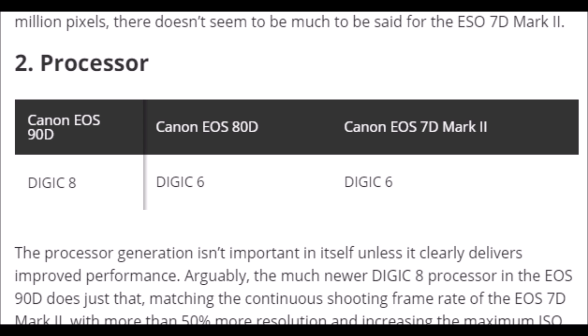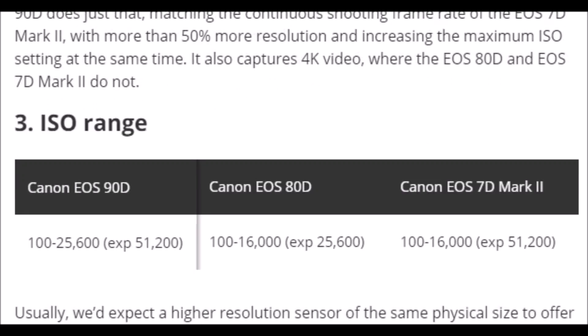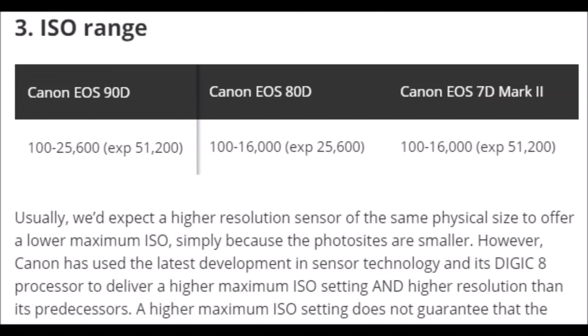ในเรื่อง ISO Range — 90D ช่วงปกติอยู่ระหว่าง 100-25,000 แต่ว่า 80D อยู่ระหว่าง 100-16,000 ซึ่งก็เท่ากับตัว 7D Mark II